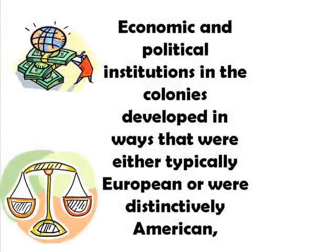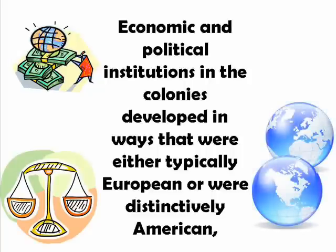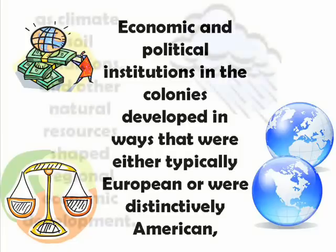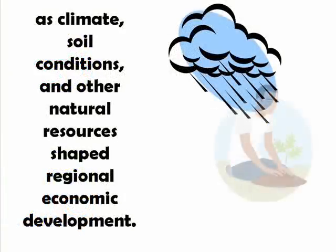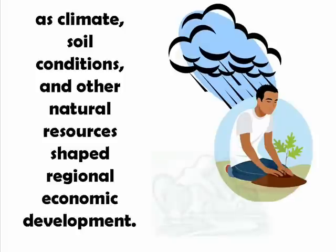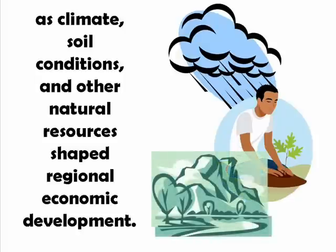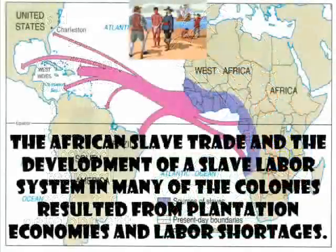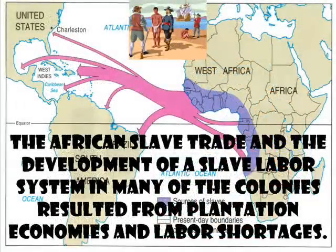Economic and political institutions in the colonies developed in ways that were either typically European or instinctively American, as climate, soil conditions, and other natural resources shaped regional economic development. The African slave trade and the development of the slave labor system in many of the colonies resulted from the plantation economies and labor shortages.